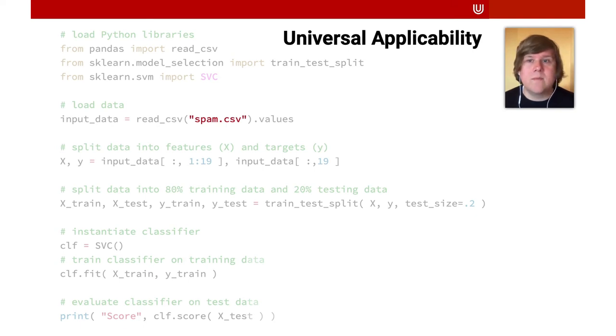To change the spam filtering system into a cancer screening tool, we only need to change the input data from spam.csv to cancer.csv. The same code could also be used to build a system that helps car dealers select which cars to buy. We discussed this universal applicability and its implications in detail in the paper.